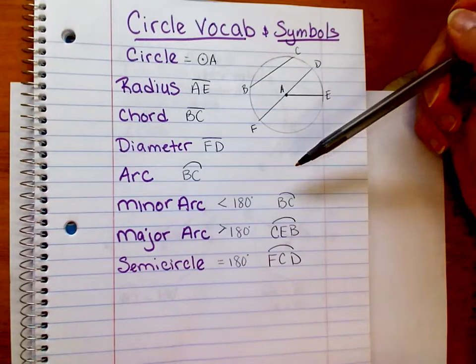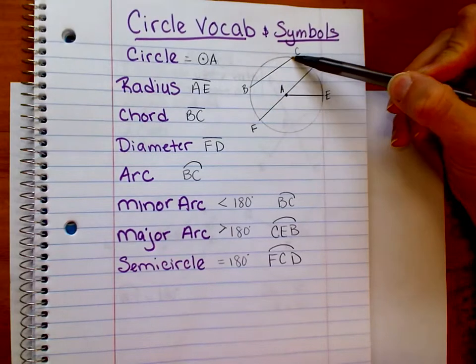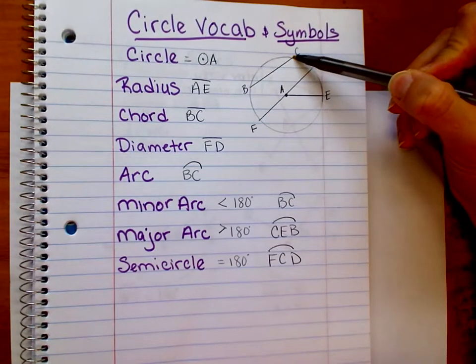There are different kinds of arcs. Minor arcs are less than 180 degrees. So this is less than 180, so we would call that minor arc BC.